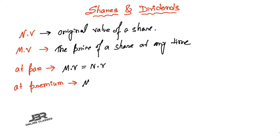If the market value is greater than the nominal value, it's called at premium or above par. At par means MV equals NV; above par means MV is greater than NV. Below par, also called at discount, means the market value is less than the nominal value.